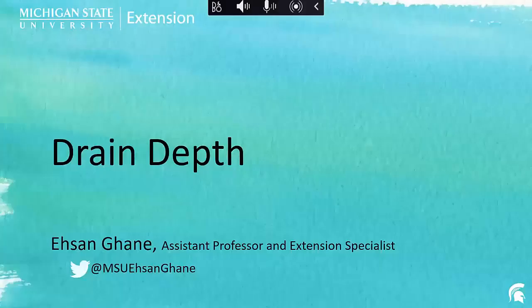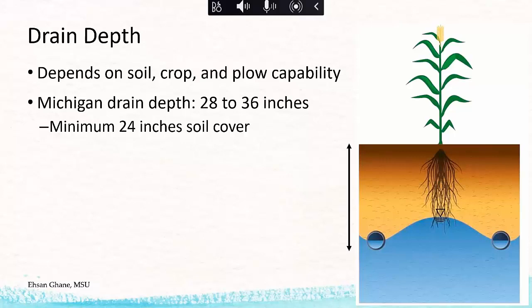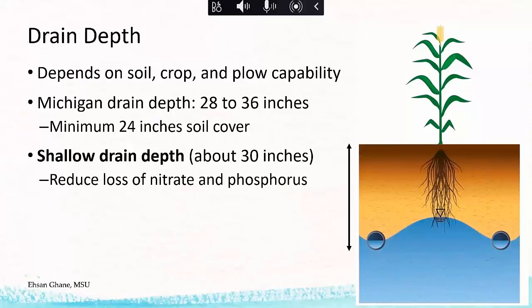The first element under drainage design is drain depth. Drain depth depends on soil, crop, and plow capability. In Michigan, drain depth typically ranges between 28 to 36 inches. But research shows that shallow drains are better for environmental protection — that's very important. If you're at about 30 inches you're in that shallow drain depth area. Research shows that shallow drains reduce nitrogen and phosphorus loss, which is very important for environmental protection.